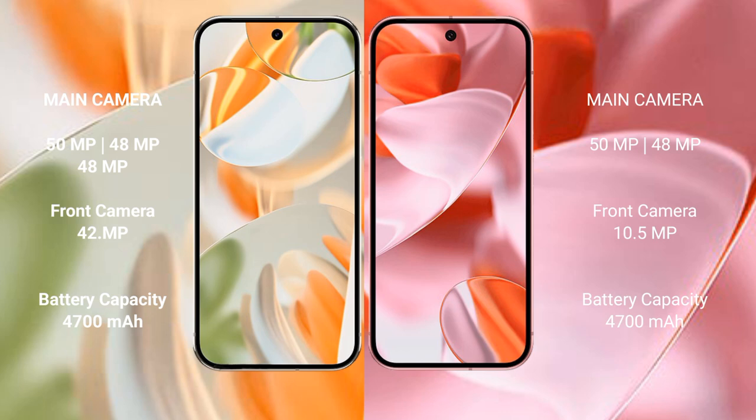Google Pixel 9 Pro has a 4700 mAh battery with 27-watt fast charging support. Google Pixel 9 also has a 4700 mAh battery with 27-watt fast charging support.